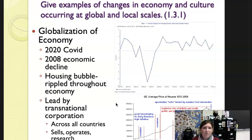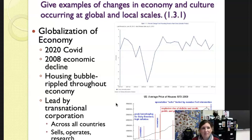A lot of this was led by transnational corporations across countries. From about the middle of 2008 through 2010 the U.S. economy actually shrank for several consecutive quarters, which is really a depression. We then began to see a boom occur especially around 2015 to 2017, and the economy started to pick up again at the end of 2020.